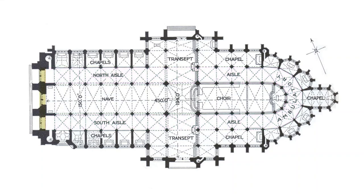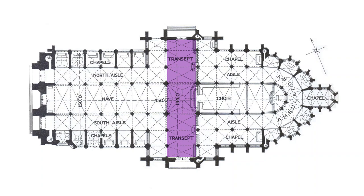Running from the west entrance or narthex of the cathedral to the centre of the church is the nave, sometimes also known as the central aisle. Running north to south is the transept, which makes up the arms of the cross. The space where the transept meets the nave is called the bay. Directly ahead of the nave is the choir, and in front of the choir is the altar in the apse of the cathedral, where the priest conducts his mass.